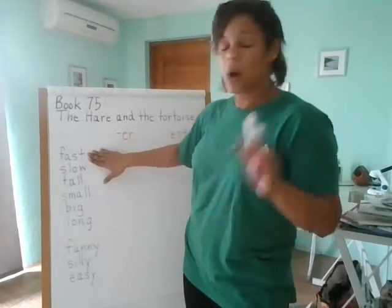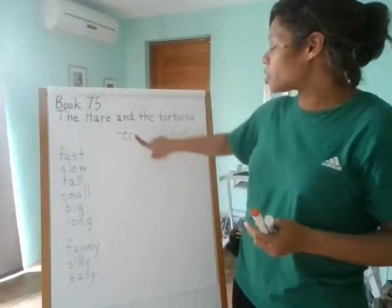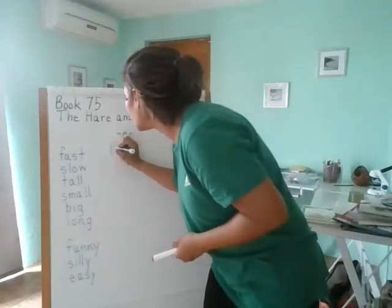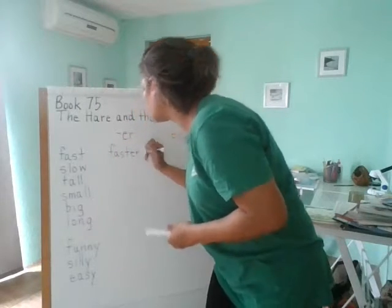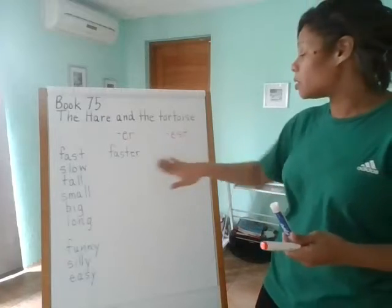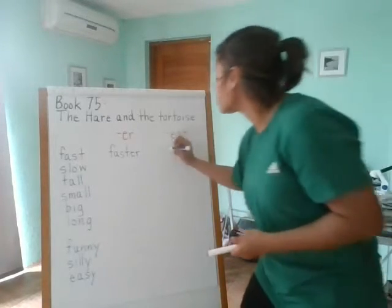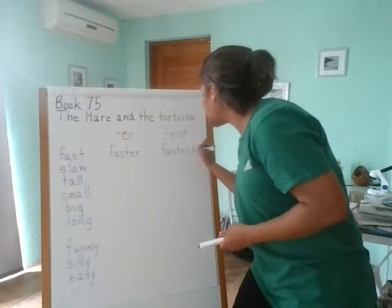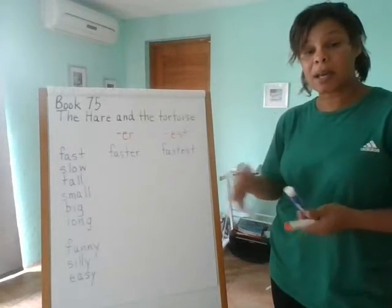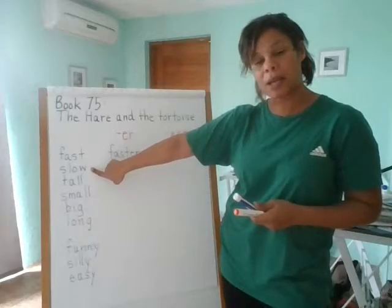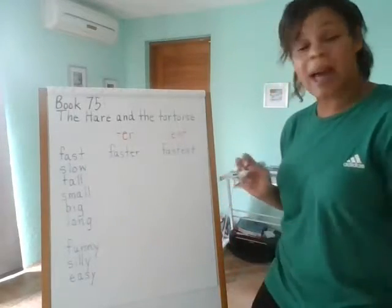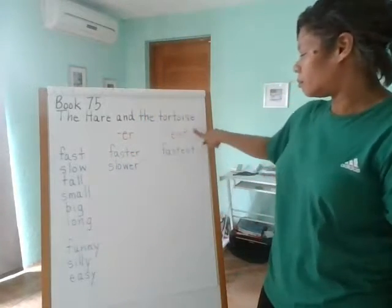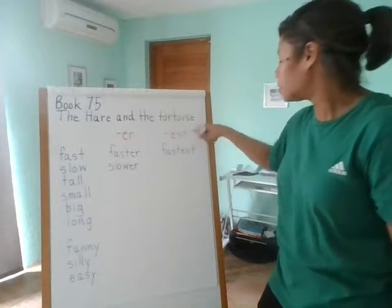One child can be fast, but another child can be faster — you just add -er, so it becomes faster. But then another child might be the fastest — we just add -est. The next word is slow. Just add -er and it becomes slower, or somebody might be the slowest — just add -est.